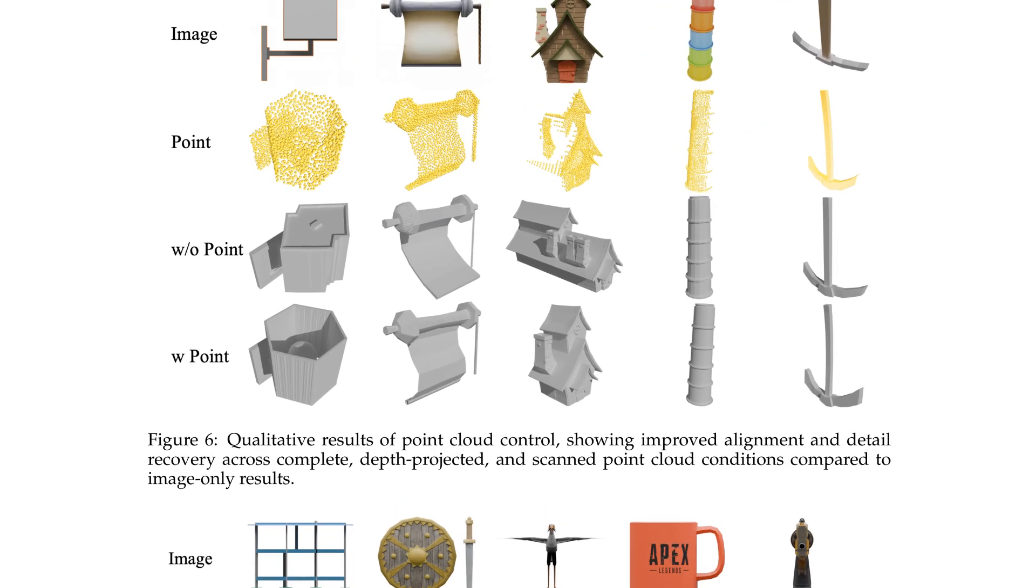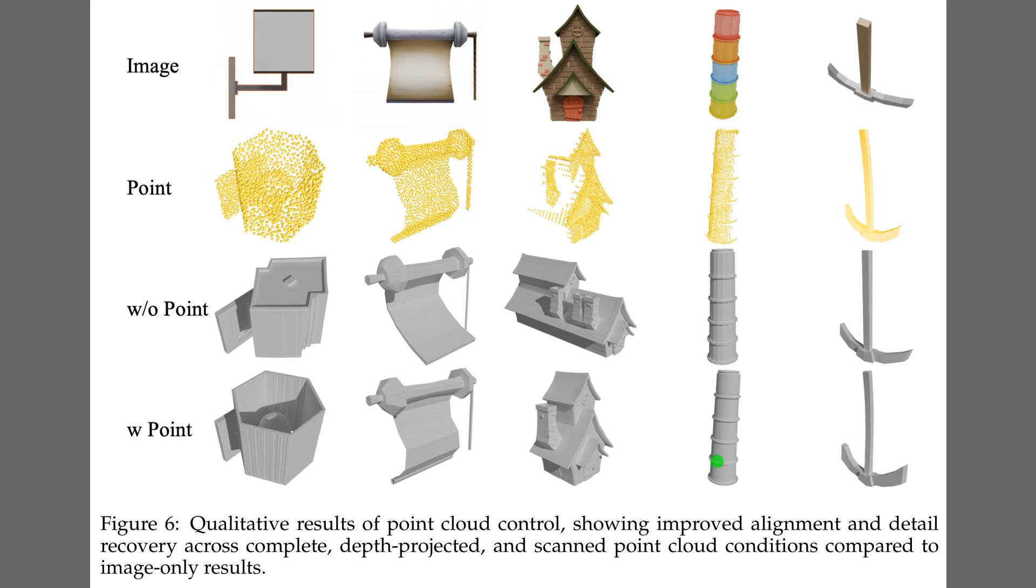Figure 6 shows that adding point cloud control sharply improves geometry compared with image-only generation. A point cloud means a set of three-dimensional dots sampled from an object's surface, which gives the model a concrete spatial scaffold.